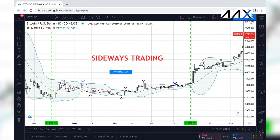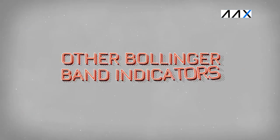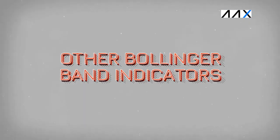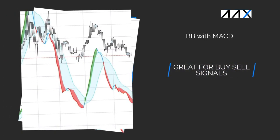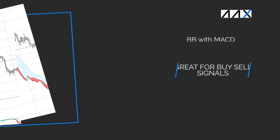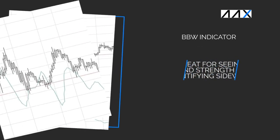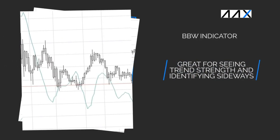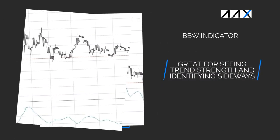A great way to visualize the Bollinger Band Squeeze is through using the Bollinger Band Width Indicator. The Bollinger Band Width Indicator can also help to view the slowdown of bearish and bullish Bollinger Band moves. What other Bollinger Band indicators work well? Firstly, you have the Bollinger Band MACD, which works really well at identifying entry and exit points. You also have the Bollinger Band Width, which is really helpful for identifying sideways trading periods.